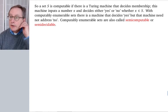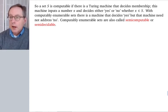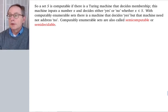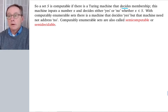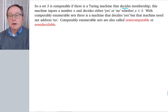Okay, so the basic idea here is that a set is computable if there's a Turing machine that decides membership. I can decide membership in the set of even numbers. I can decide membership in the set of prime numbers. I can decide membership in the set of perfect squares. I can decide membership in the finite set 0, 1, 2. You input a number X and you decide either yes or no whether X is an element of S.